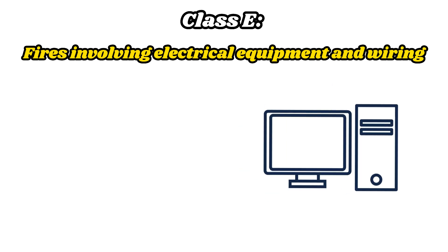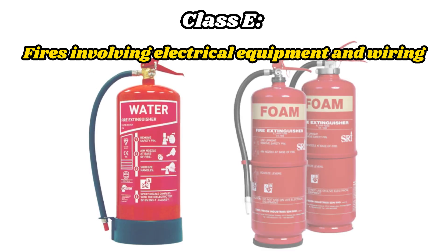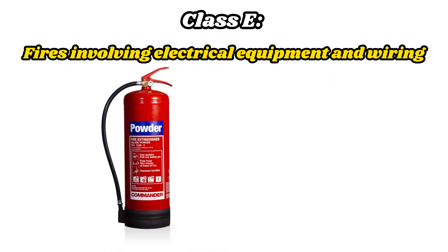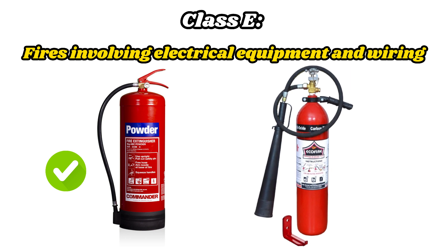Class E fires are associated with burning electrical equipment, computers, and other electrical devices, so using water or foam can result in electrical shock. Powder extinguishers disrupt the chemical reaction occurring in the flame, thereby stopping the fire. Carbon dioxide extinguishers do not conduct electrical current and do not damage electronics, making them suitable for extinguishing Class E fires.